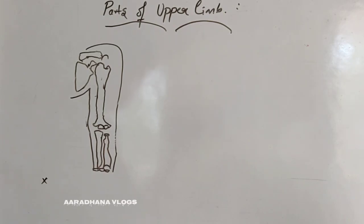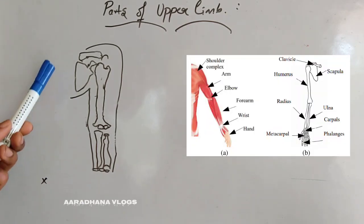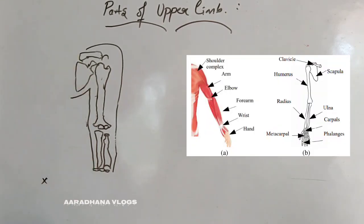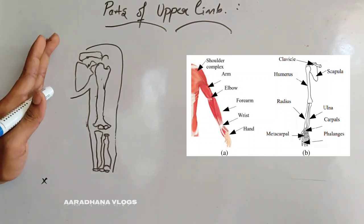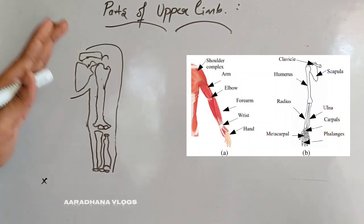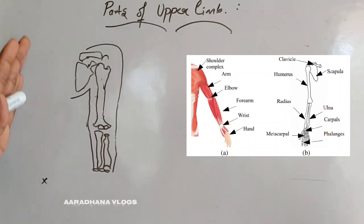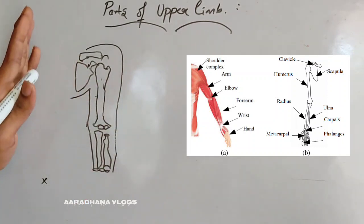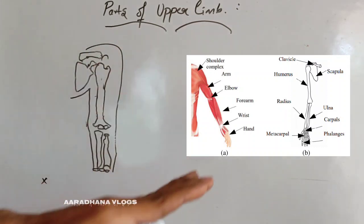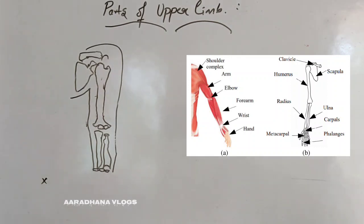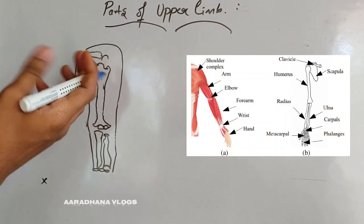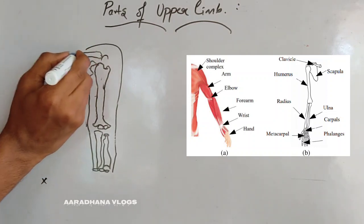As you can see, we have a pictorial representation — please take this as a representation only. There are two shoulders in our body, so if we study one shoulder joint and the bones in it, the same will apply to the other shoulder as well. Consider this as the right upper limb. For the right upper limb, the first bone is the clavicle bone.